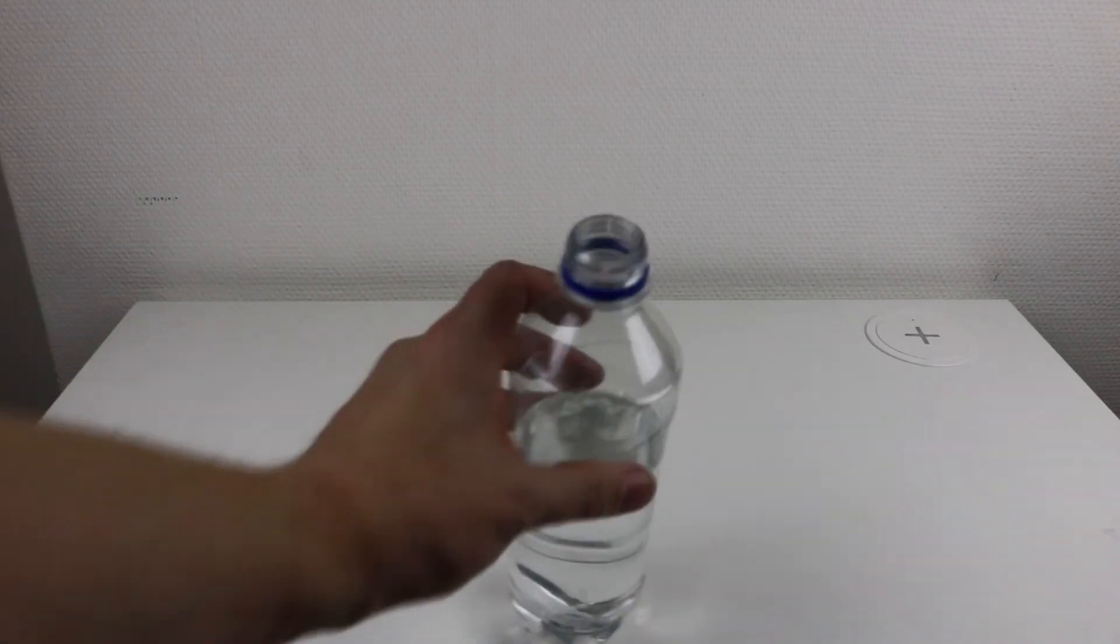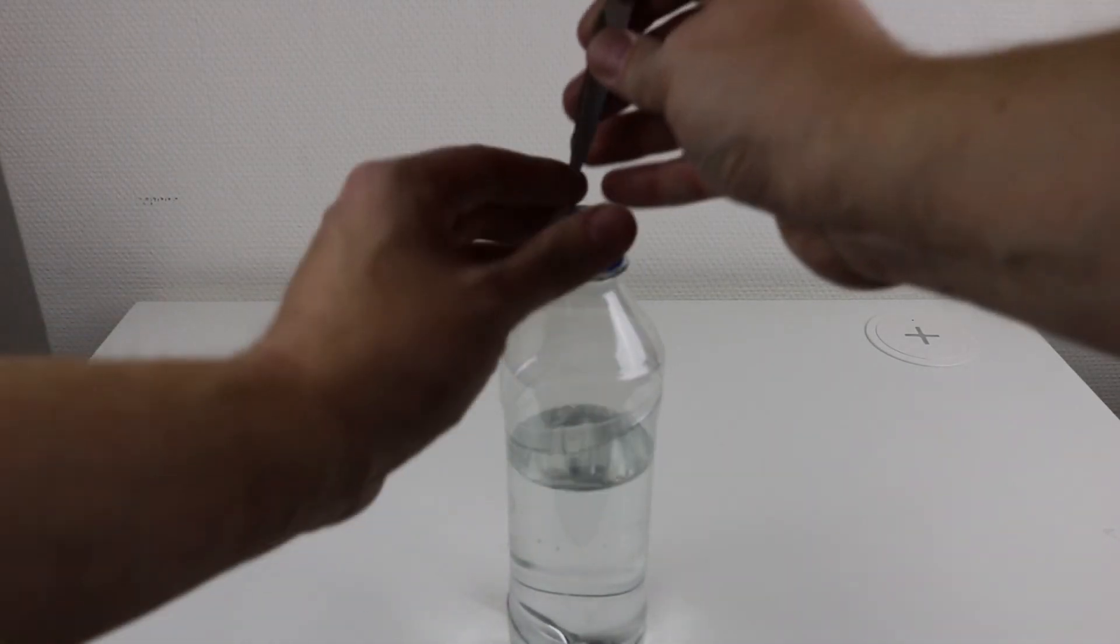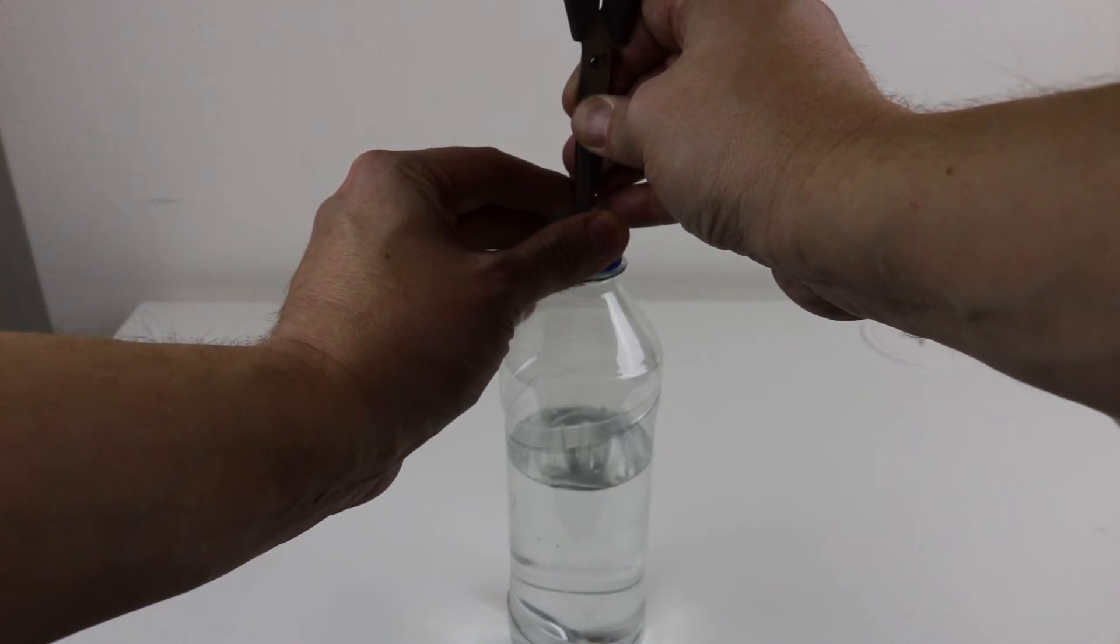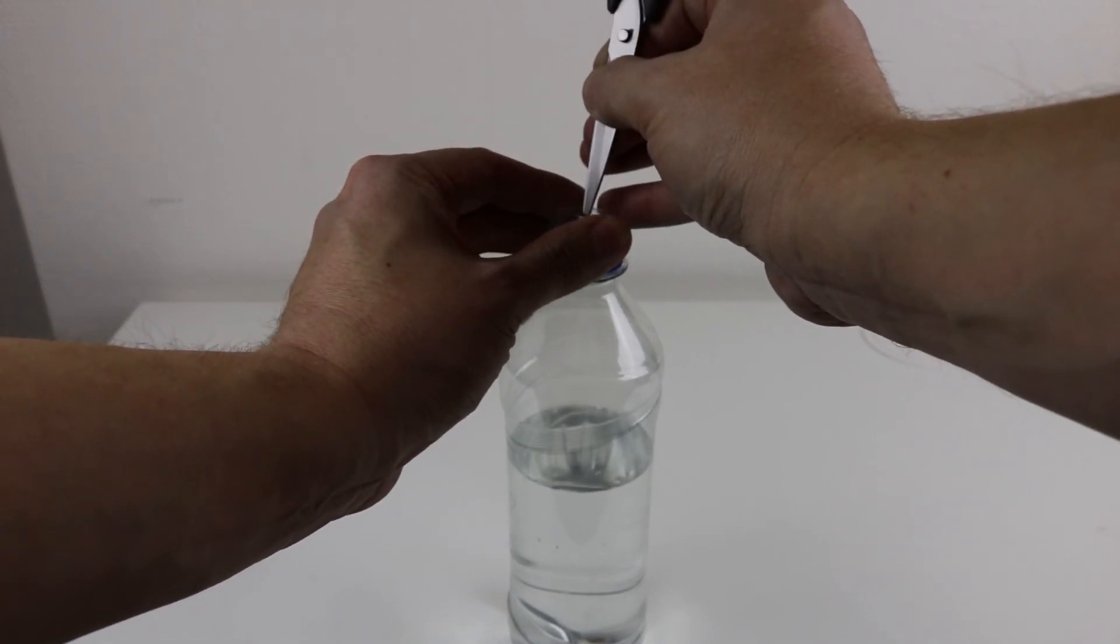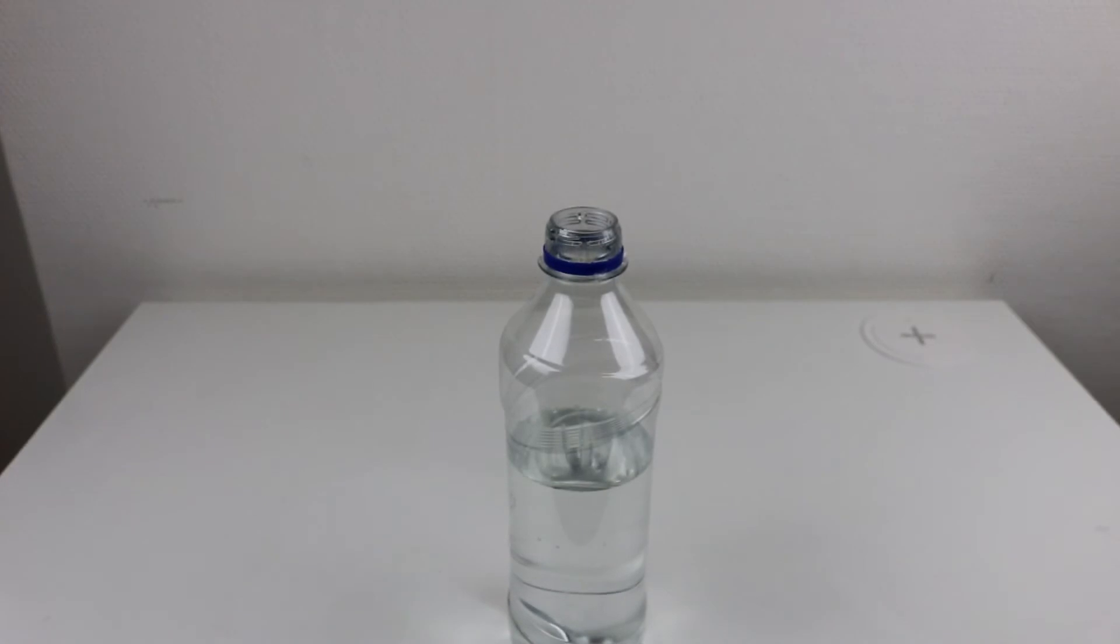Then we take a scissor and we just make a small hole that is small enough to keep the tension of the water when having it upside down.